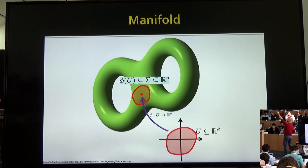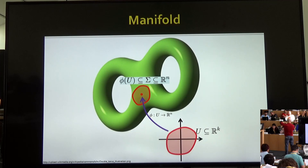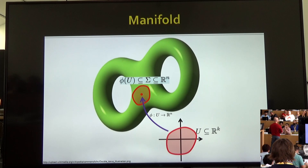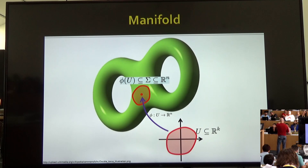A manifold like the double torus has the property that if I choose a point on it, there exists a neighborhood around that point such that locally it looks like Euclidean space R^k. In other words, there exists a smooth, bijective, well-behaved map from R^k into that neighborhood. It doesn't have to exist globally — it would be hard to map the double torus into the plane globally — but just in a small neighborhood around every point.